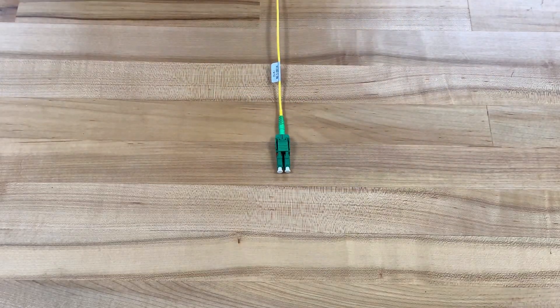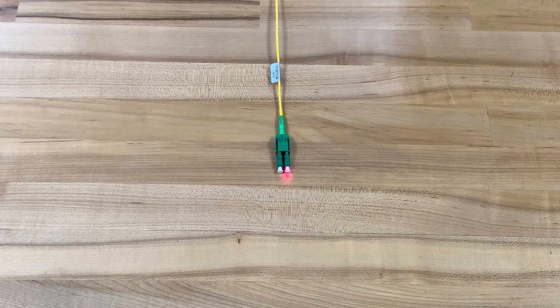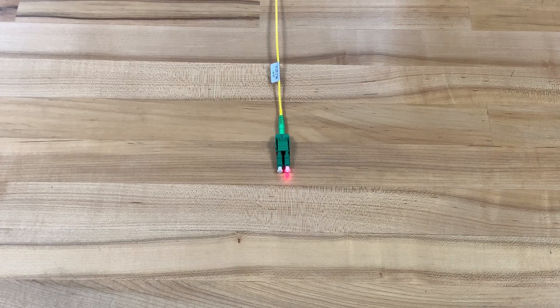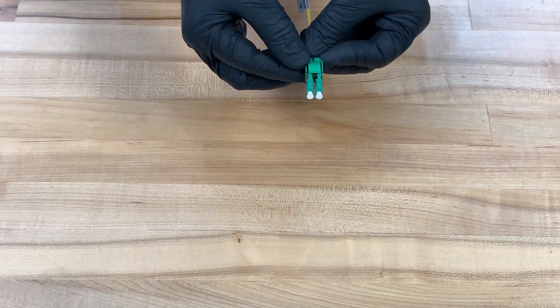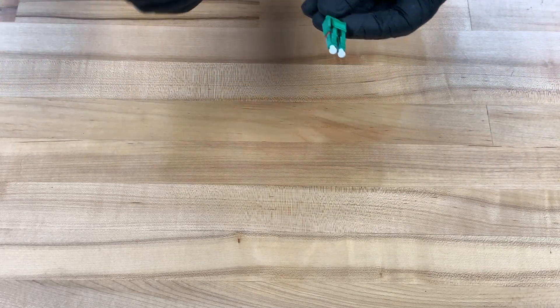After that is done, you could verify the polarity with the smart checker again and make sure everything is mapped correctly. Thank you for your time, and that's how to change the polarity on Sanko's LC duplex switchable connector.